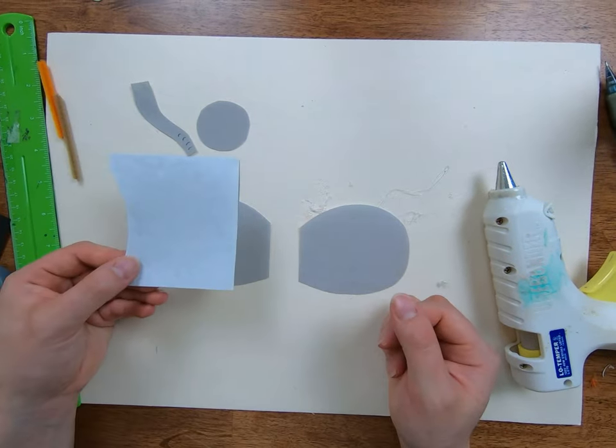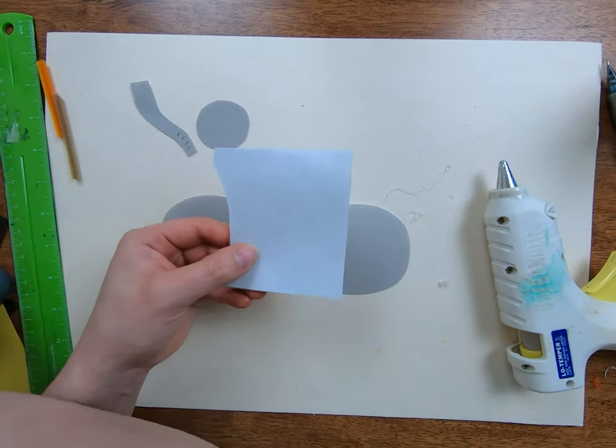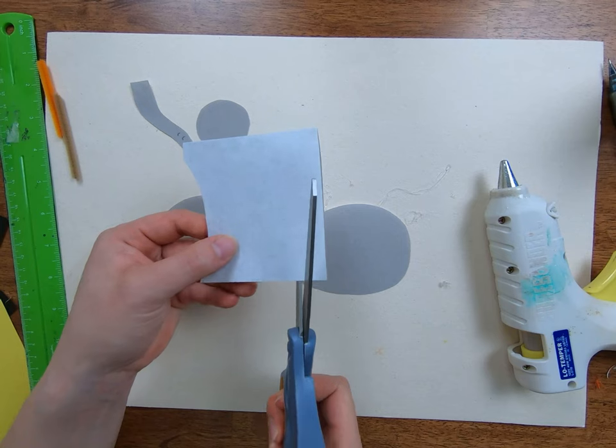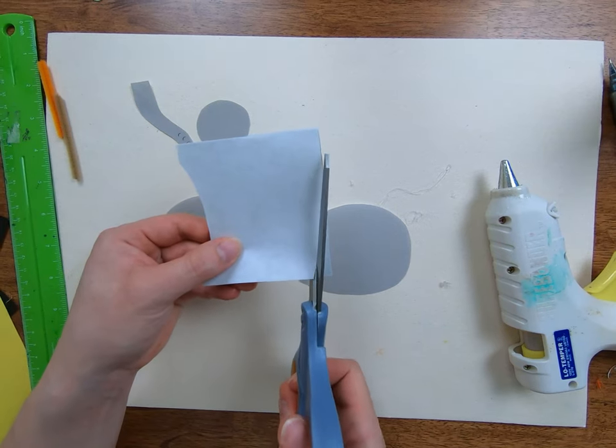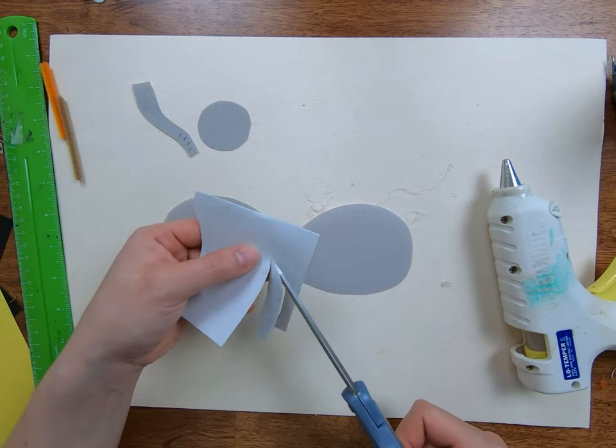Now let's make the tusks. Using some white paper that you folded in half, let's cut out two slightly curved lines to be the tusks for the elephant. They should be about as long as the trunk or maybe a little bit less.